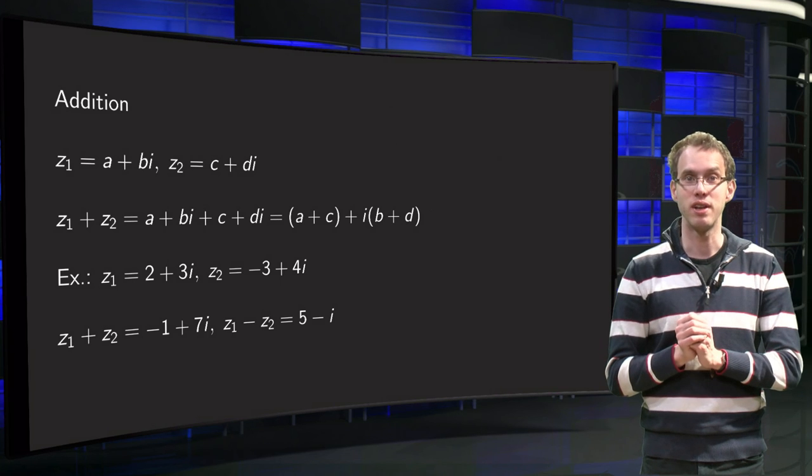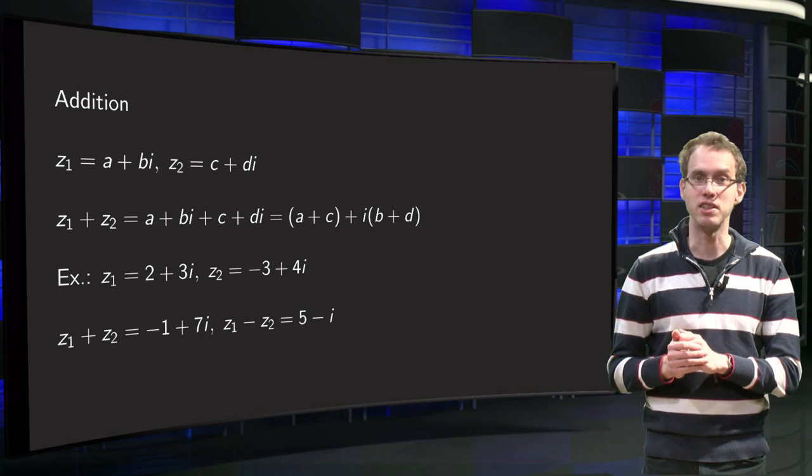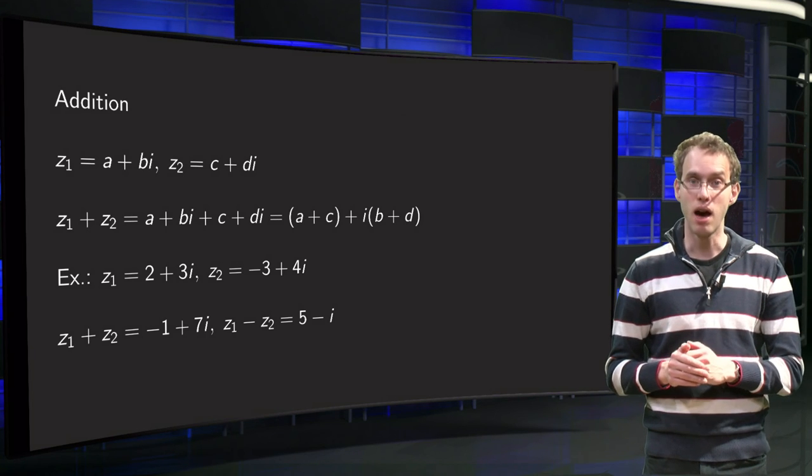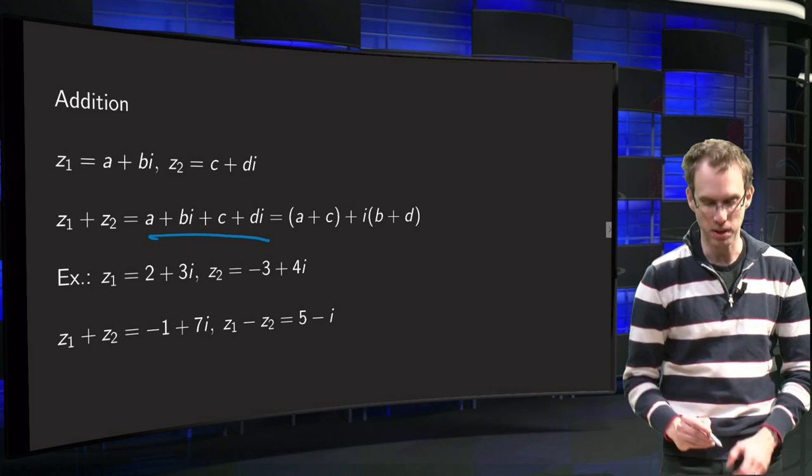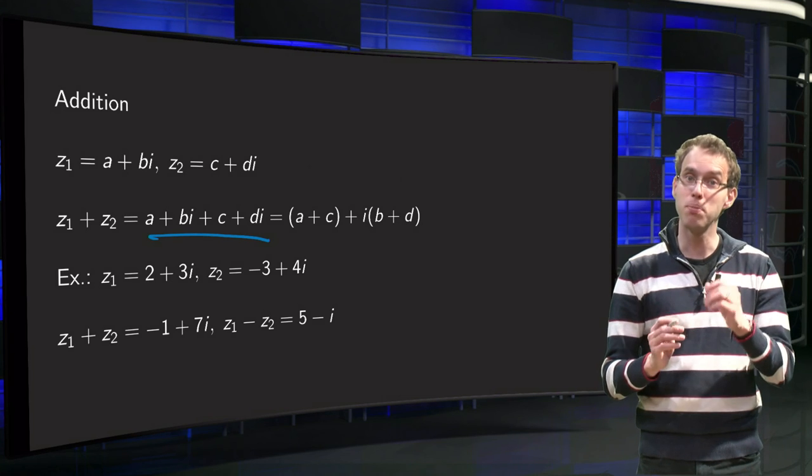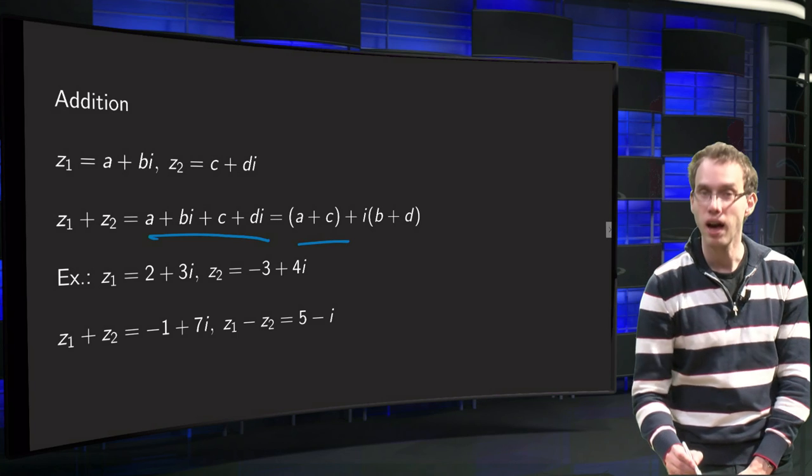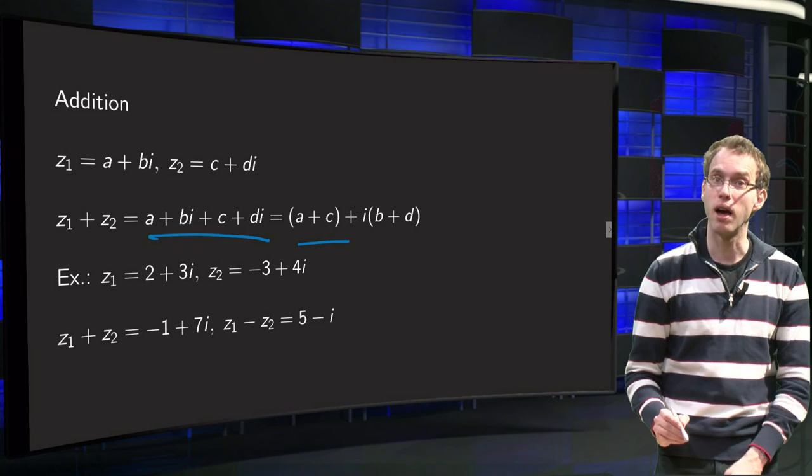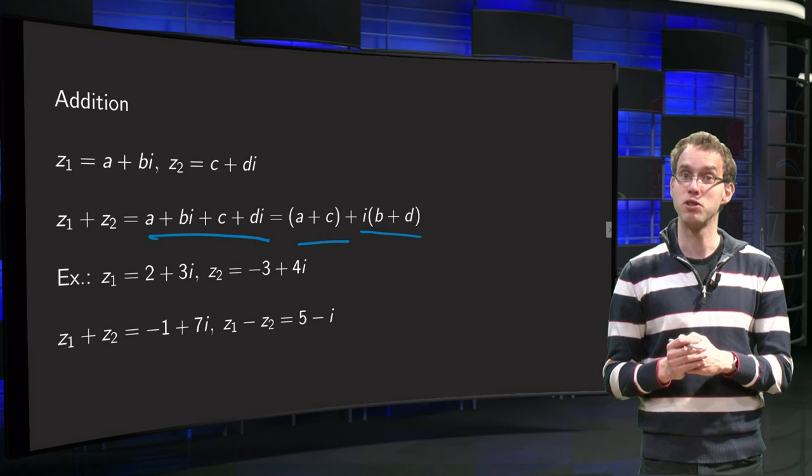So let's start with addition. Suppose we have z1 = a + bi and z2 = c + di. How are we going to add them? So z1 + z2 = a + bi + c + di. And we just add the real parts and the imaginary parts. So we add a and c and we add bi and di to get i(b + d). So that's how you add complex numbers, just add real parts and imaginary parts.